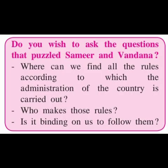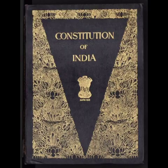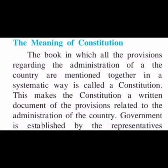In this lesson we will study in detail: Where can we find all the rules according to which the administration of the country is carried out? Who makes those rules? Is it binding — meaning necessary — on us to follow them? Let us study the meaning of Constitution. The book in which all the provisions regarding the administration of a country are mentioned together in a systematic way is called a Constitution.